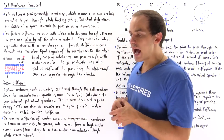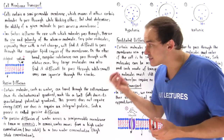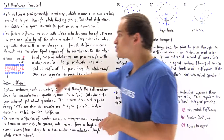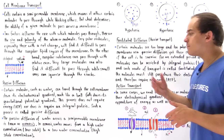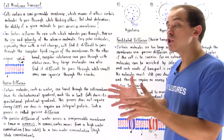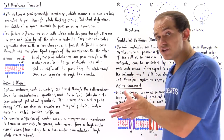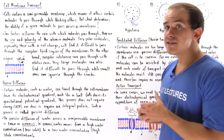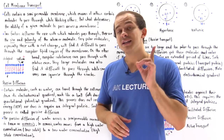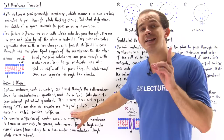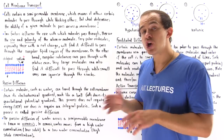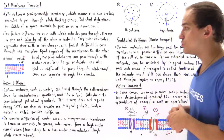Passive diffusion is basically what we just discussed. Certain molecules, such as cholesterol and water, can travel through the cell membrane down their electrochemical gradient, much like a ball falls down a gravitational potential gradient. This process does not require any use of energy in the form of ATP, nor does it require the use of an integral protein.